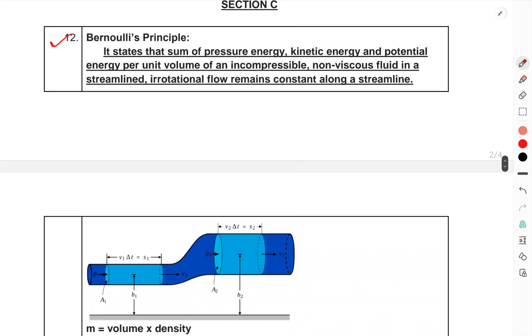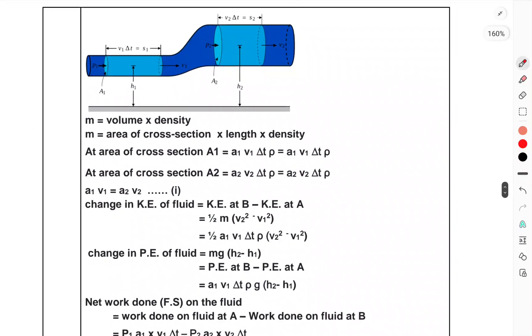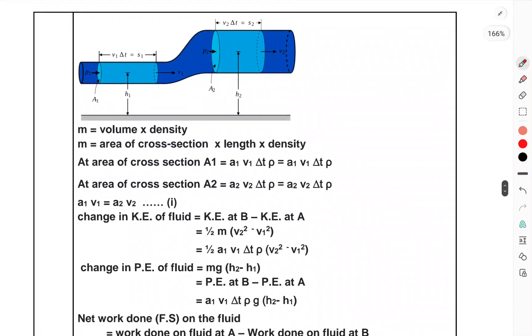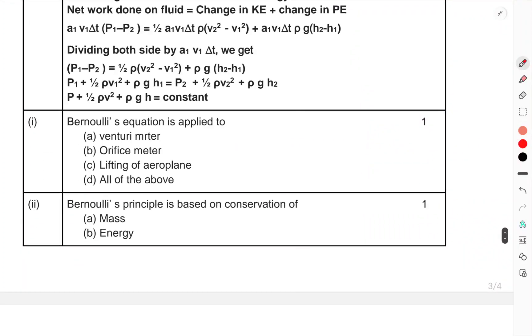Section C. Bernoulli's principle states that the sum of pressure energy, kinetic energy, and potential energy per unit volume of an incompressible, non-viscous fluid in a streamline, irrotational flow remains constant along a streamline. This was the theorem that has been provided here. You have to give the answer to these questions.